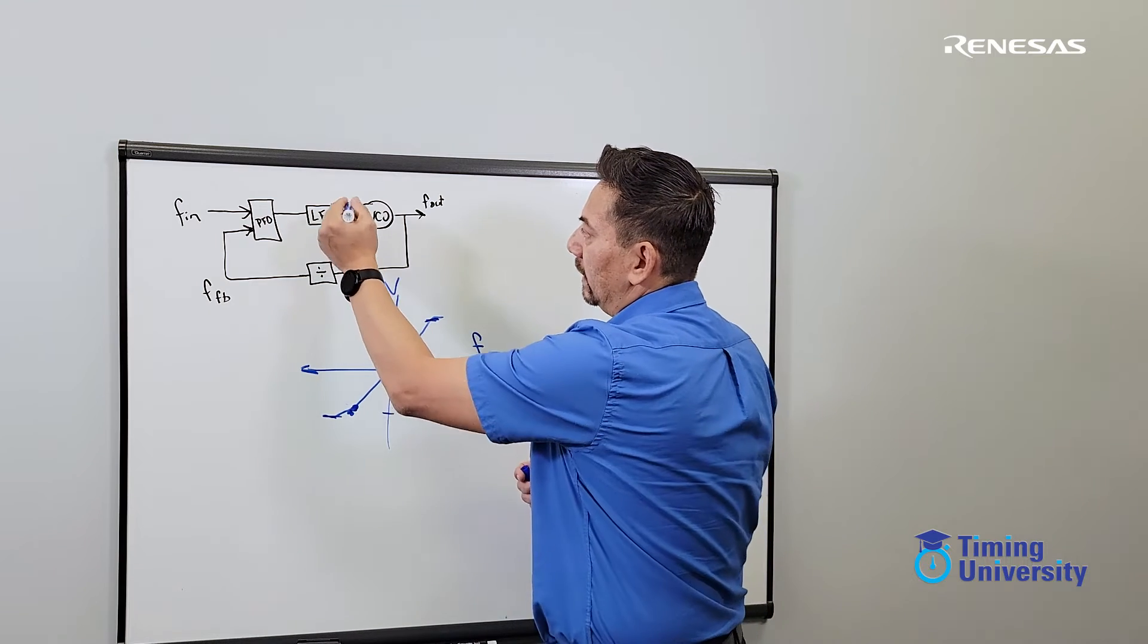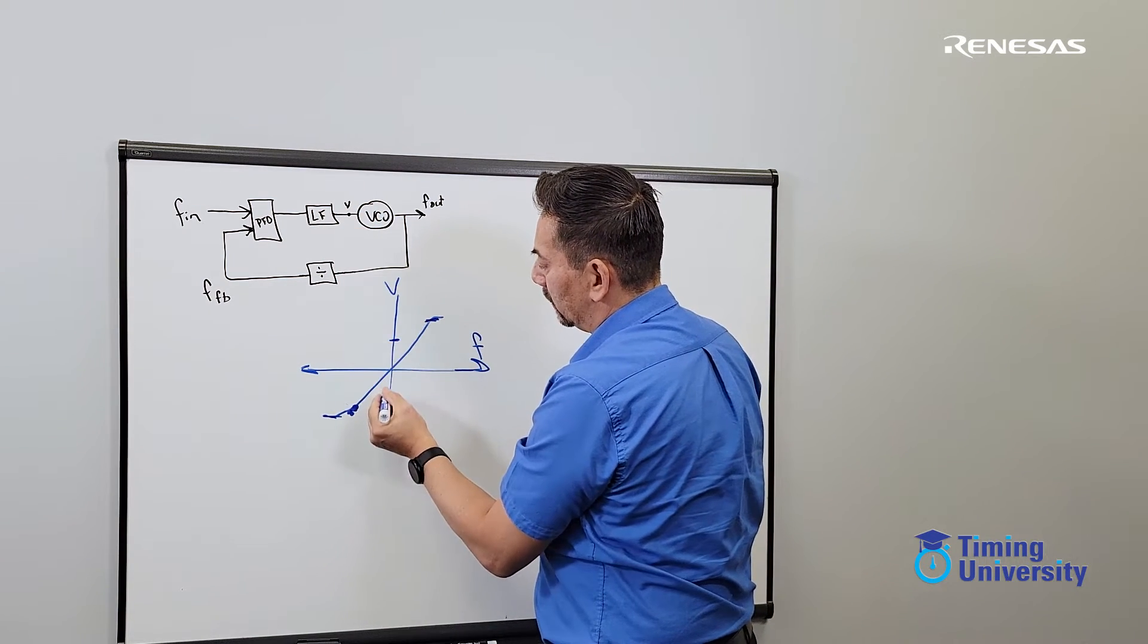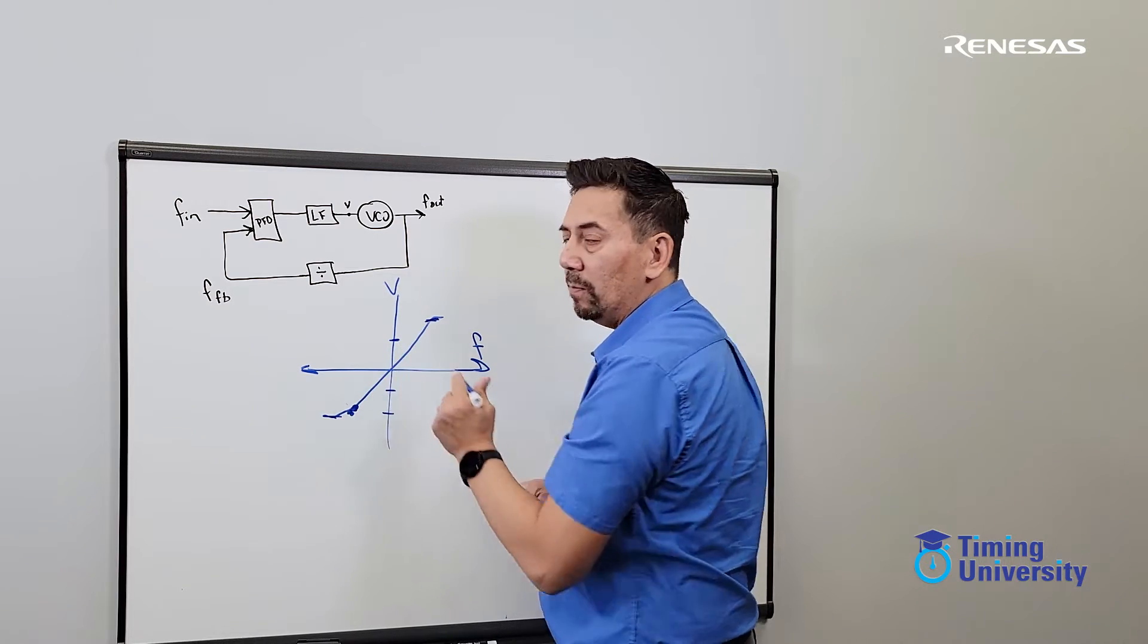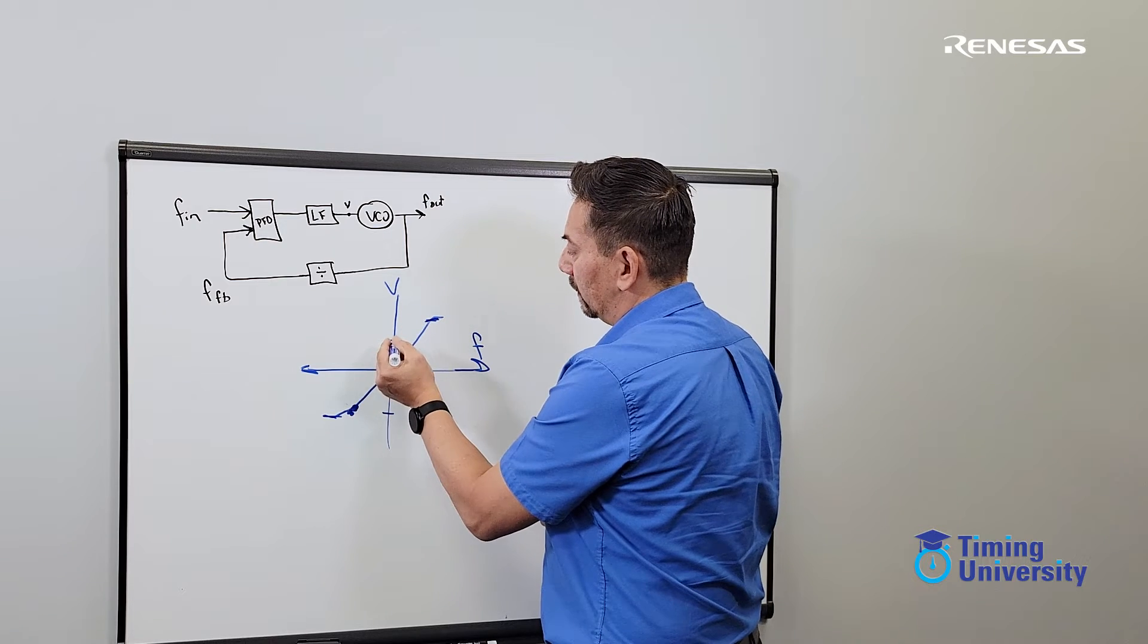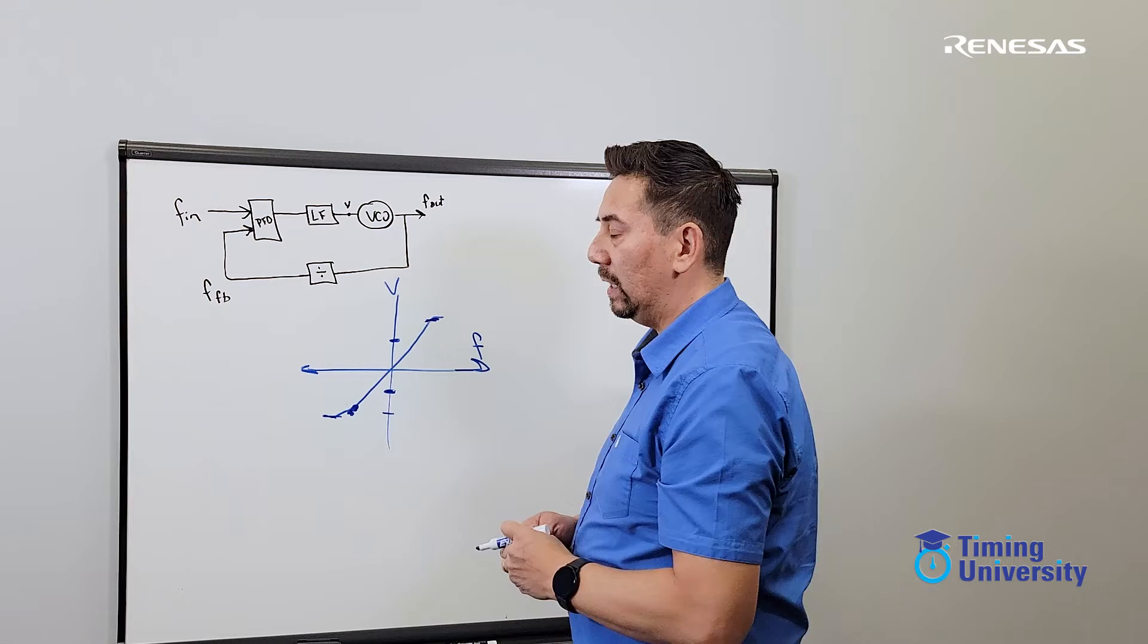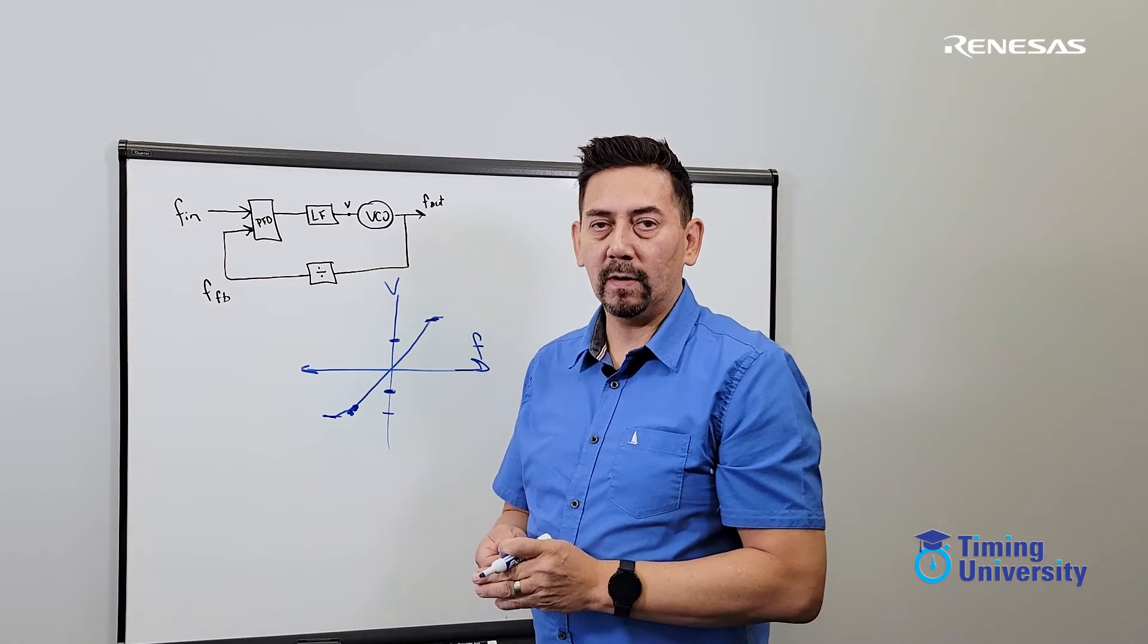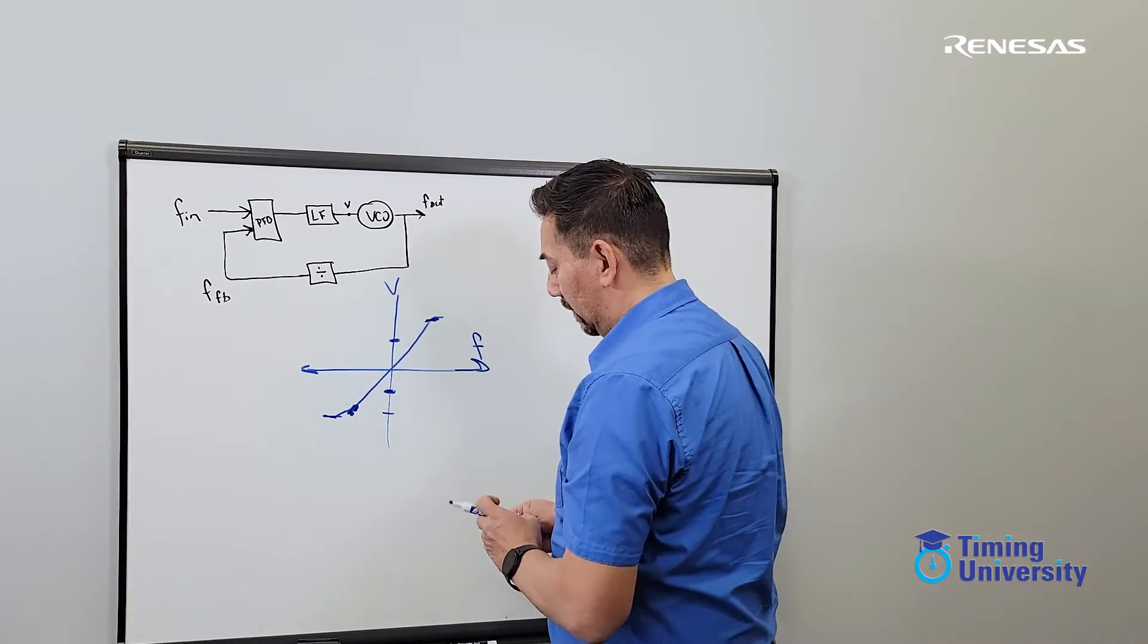So what we can do is inside the device, we can set a comparator to say if the voltage is within this intermediate range, then we know it's not railed low and it's not railed high, but the VCO is good. So that's actually one of the criteria that RF PLLs use to determine if the VCO is locked.